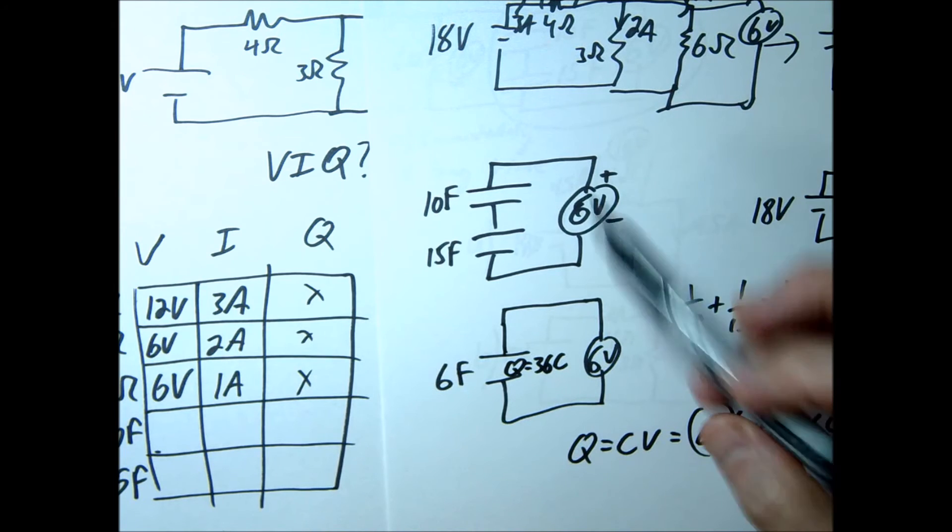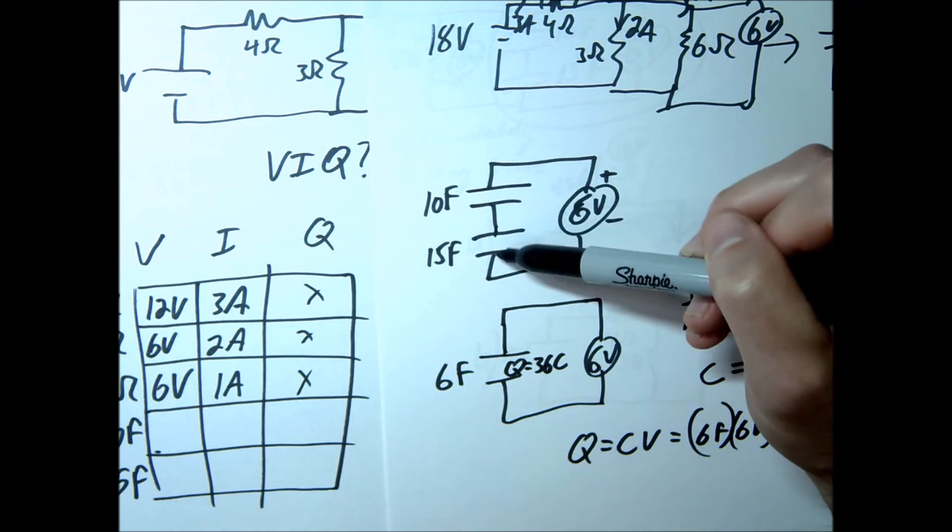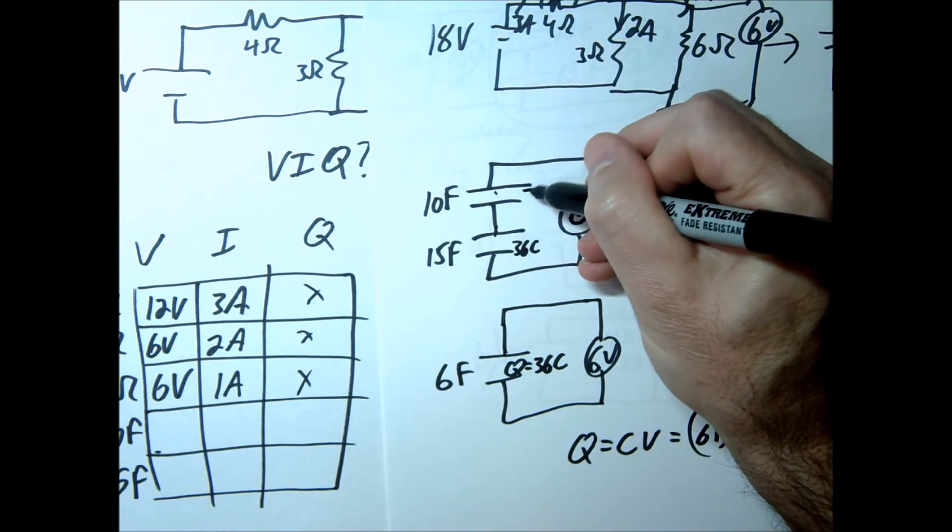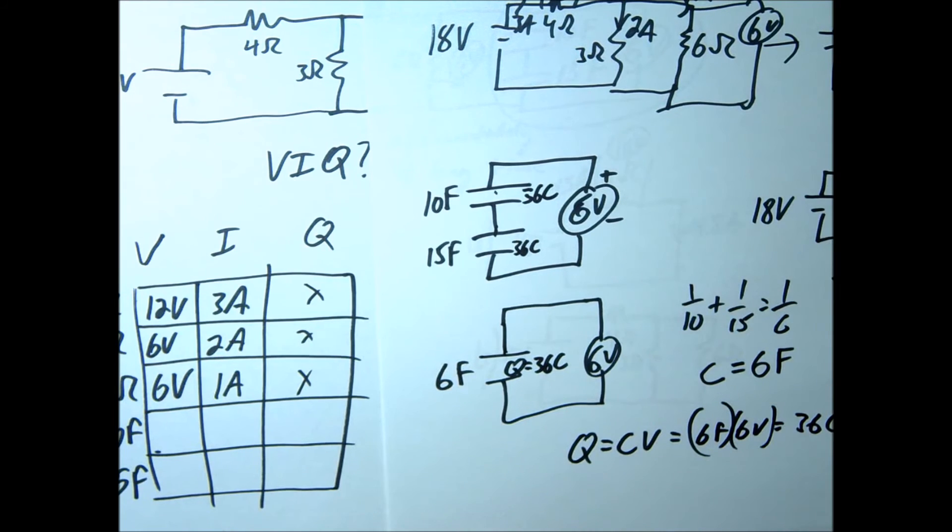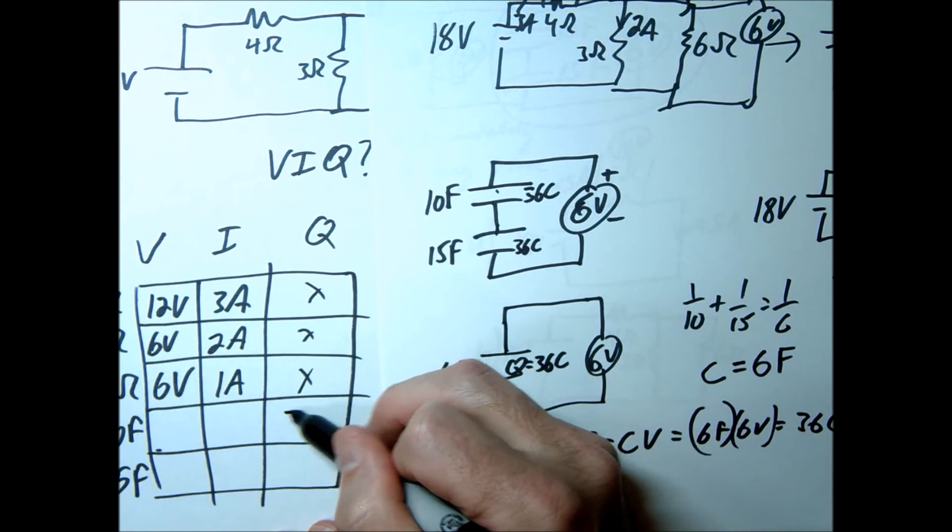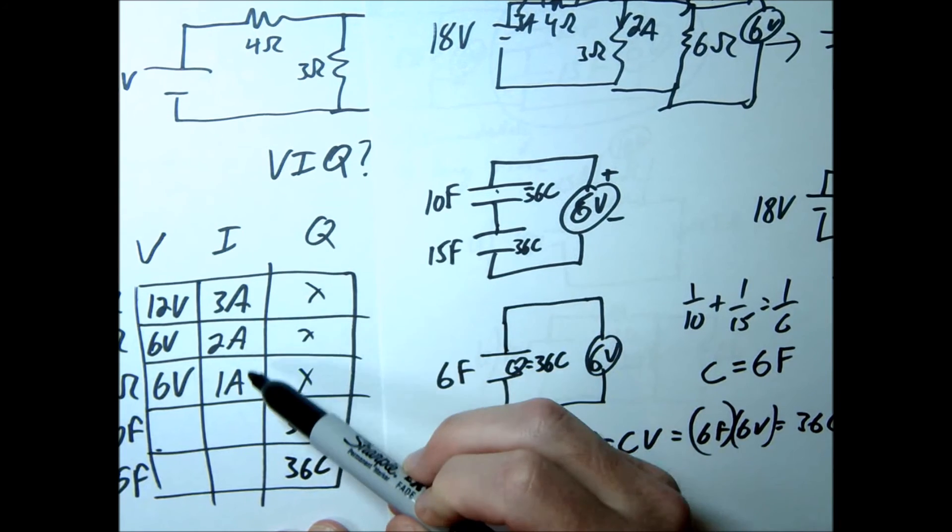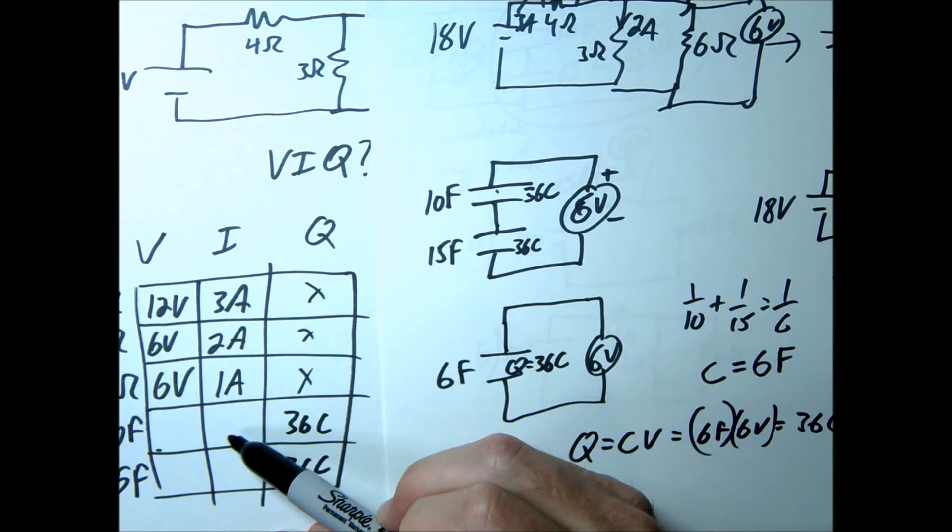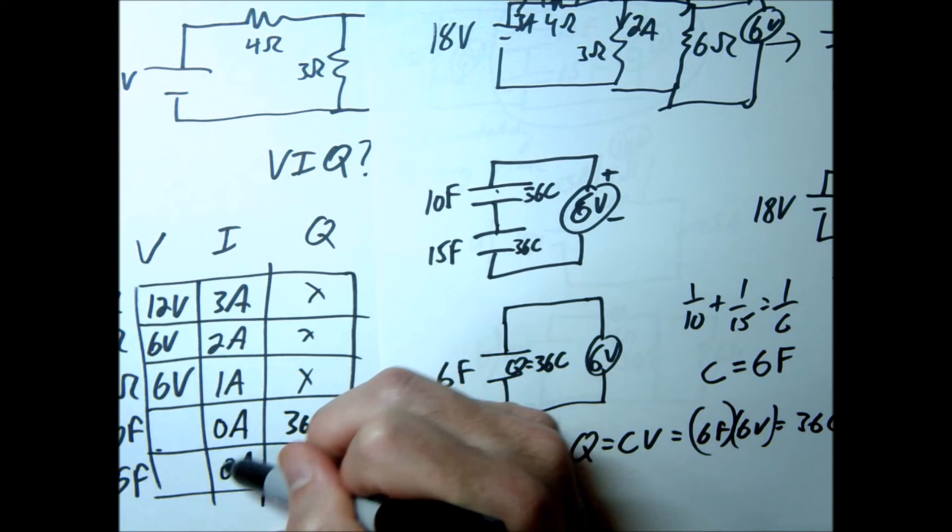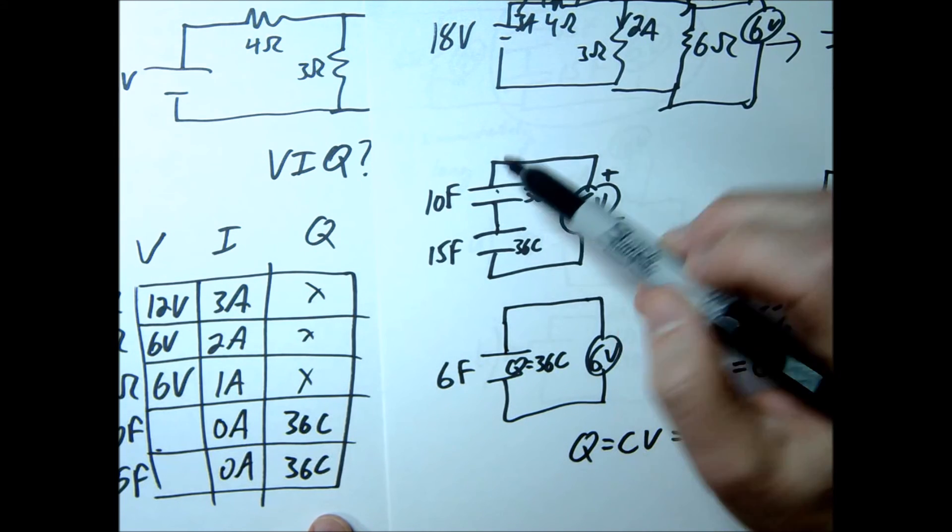Recall for series capacitors, these are going to take on the same amount of charge. So you're going to have 36 coulombs on this one and 36 coulombs on this. Let's go ahead and fill that in. So the 10 farad is going to have 36 coulombs, this is going to have 36 coulombs. I didn't write the current. Remember at steady state a long time, the current would be zero. No more current flowing through those branches. So now we just want to finish this up and find the voltage across these.